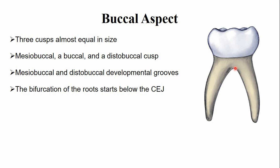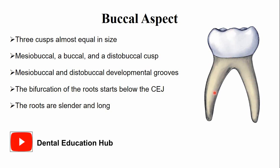In the root, there is a bifurcation below the cemento-enamel junction. The root trunk is very small, and there are two roots — the mesial root and the distal root. The roots are cylindrical and quite long compared to the crown length. In the middle third and apical third portions, the roots are quite flared and divergent.